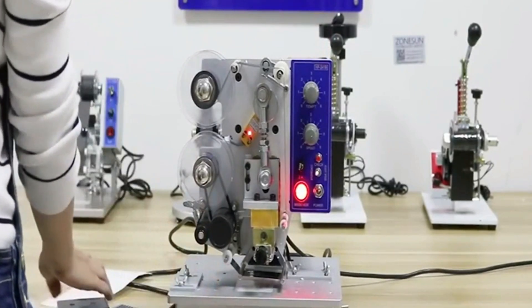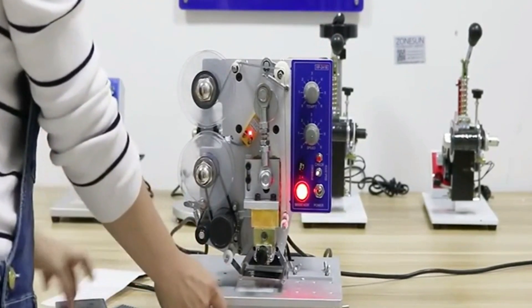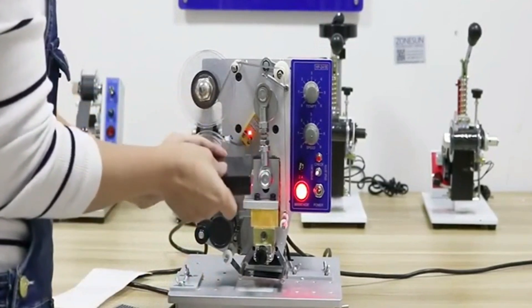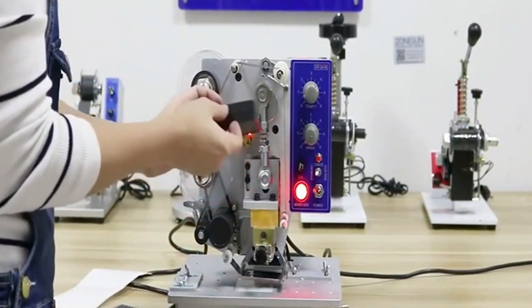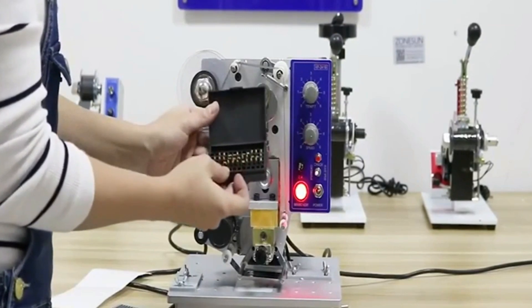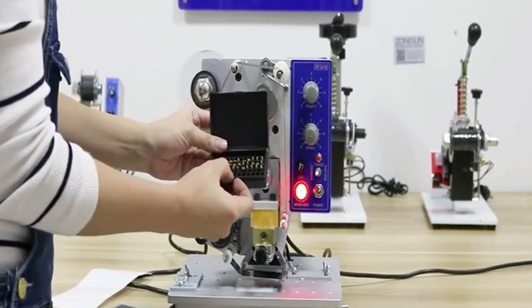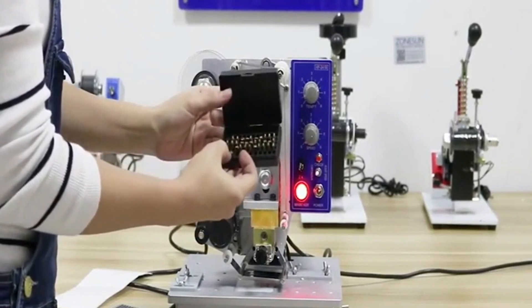Now I would like to show you how it works. This machine comes with a set of LB case containing some numbers and 26 English letters, and some symbols.